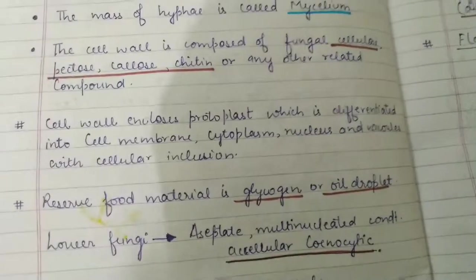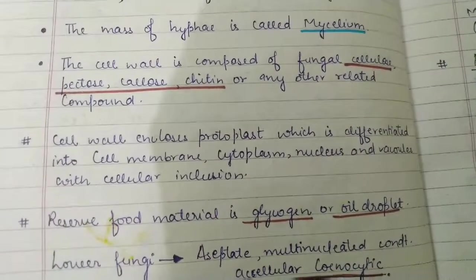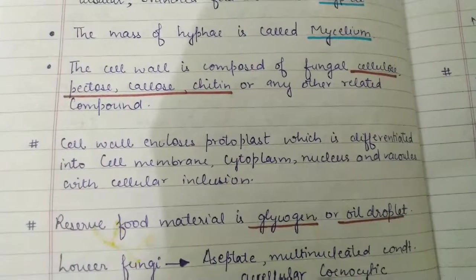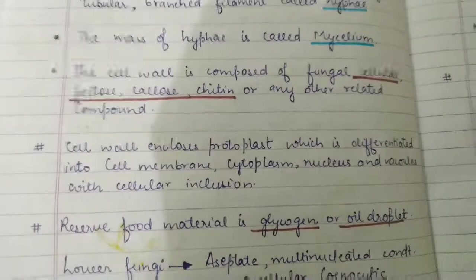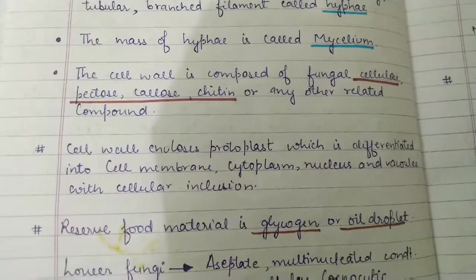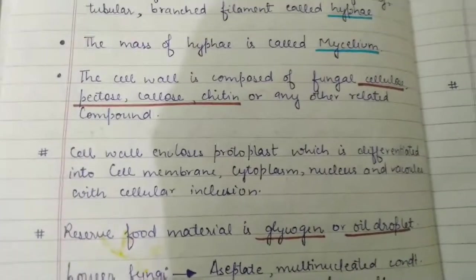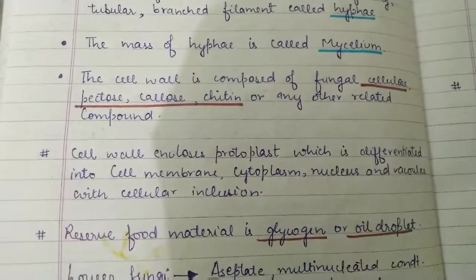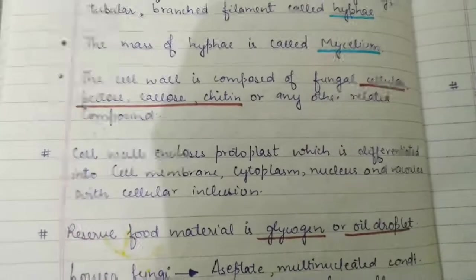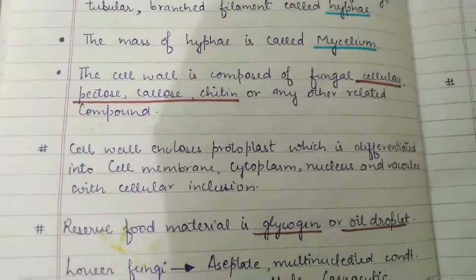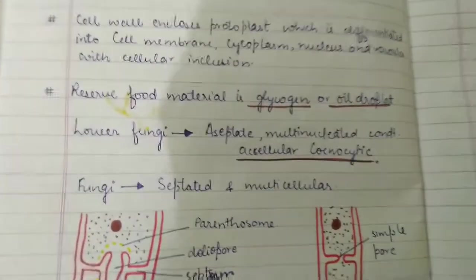The reserve food material is another important basic feature. The reserve food material in fungi is oil droplets or glycogen. Glycogen is a polysaccharide.